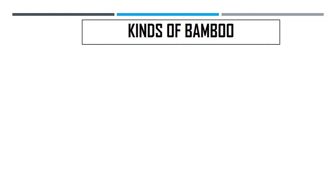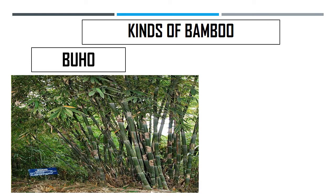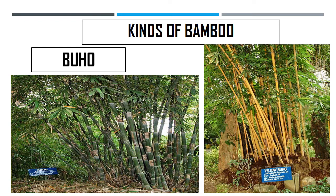Another kind of bamboo is what we call boho. This kind represents the third group of bamboos, and it is usually tall and straight. The stems are articled and hairy, and it is used for fish traps, for carrying water, and other purposes.